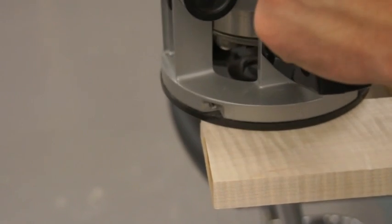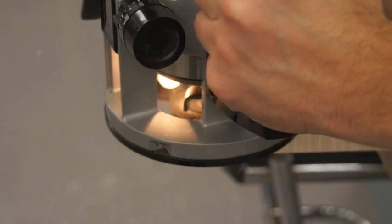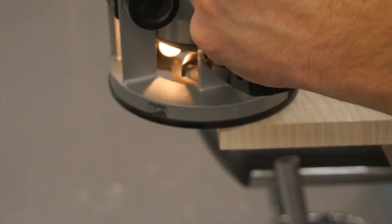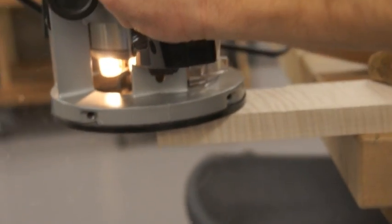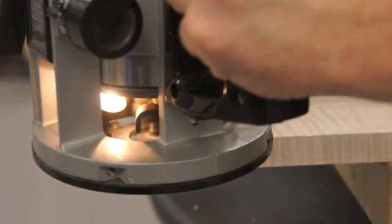You should move the router counter-clockwise around the edge of your work to avoid kickback and injury. Route end grain first to avoid chips remaining in your work once routing is complete. When cutting end grain, the last half inch of an edge should be cut in a clockwise direction.